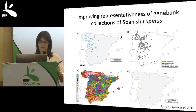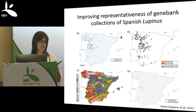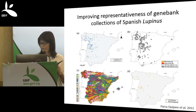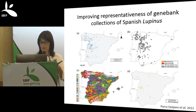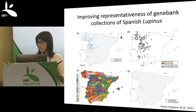The figure illustrates these steps: panel A shows the collected occurrence data, panel B shows buffers around data points, panel C shows the ELC map where each colour represents a different eco-geographic category — meaning eco-geographic variables at those sites are the same — and the final panel shows the collecting spots that should be targeted for conservation.